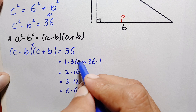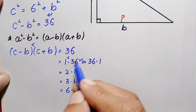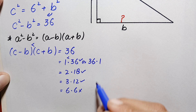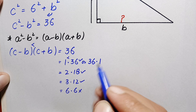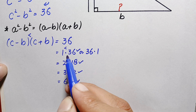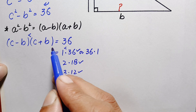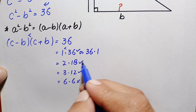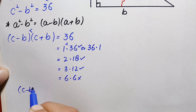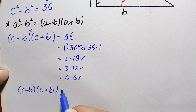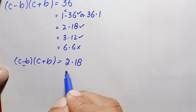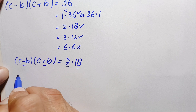The valid pairs are 1×36, 2×18, and 3×12. The pair 6×6 cannot be used since it gives the same value for both expressions, yielding no unique solution. We have three possible cases, but we will find one solution. Let us take the pair 2 × 18, so the equation becomes (c − b)(c + b) = 2 × 18.